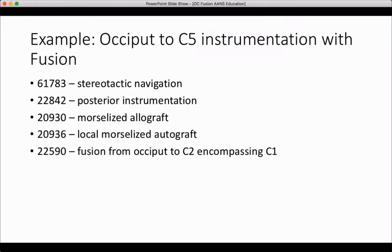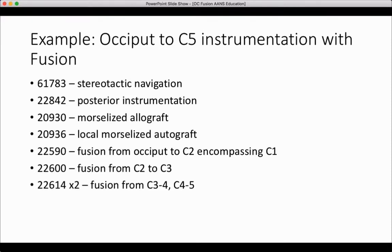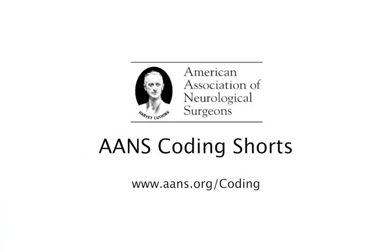Continuing the example: 22590, which encompasses the fusion from occiput to C2 including C1; 22600, which is the fusion from C2 to C3; and then 22614 twice, indicating the fusion from C3 to C4 and C4 to C5.